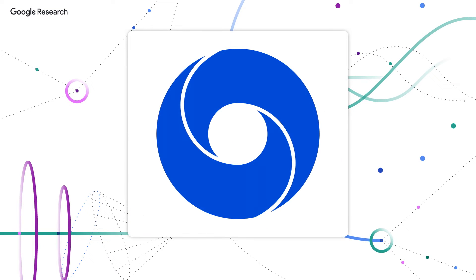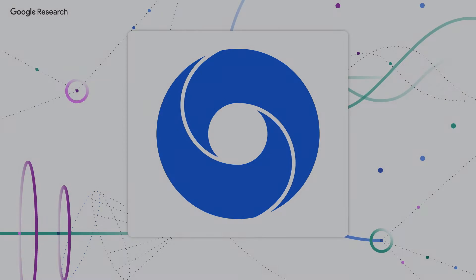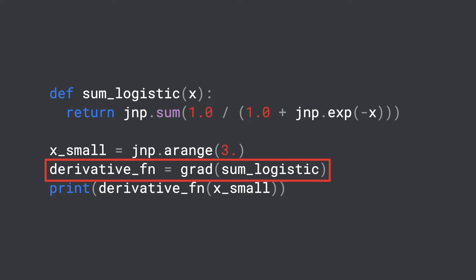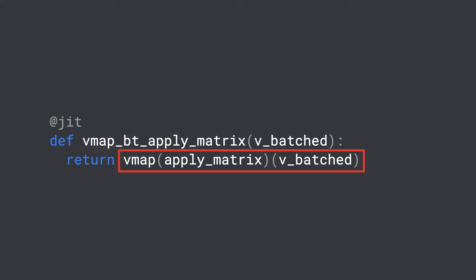Such as DeepMind, who chose to use JAX in their research for a number of reasons. The first was differentiation, and the native support for forward and reverse mode automatic differentiation of arbitrary numerical functions in JAX worked perfectly for them. The next was vectorization, where in ML research, one often has to apply a single function to lots of data — for example, calculating the loss across an entire batch, or evaluating per-example gradients for private learning.